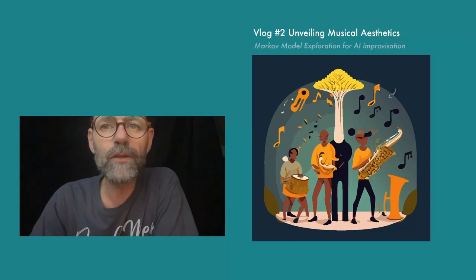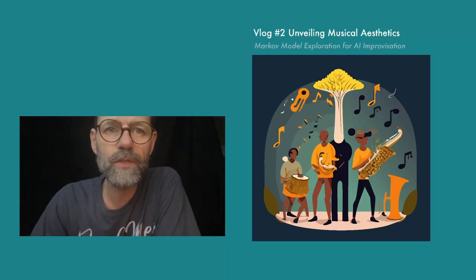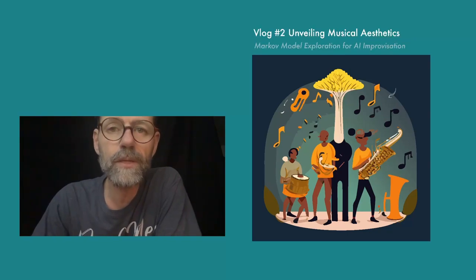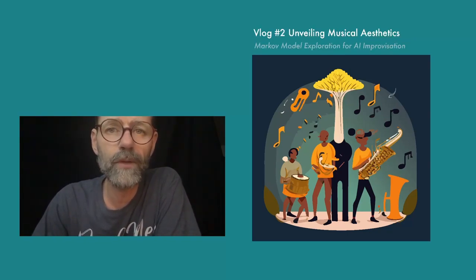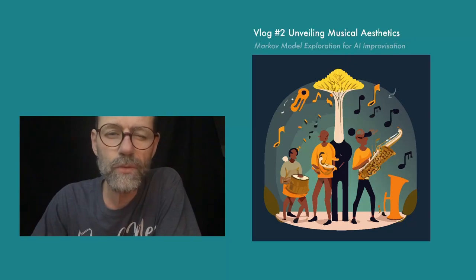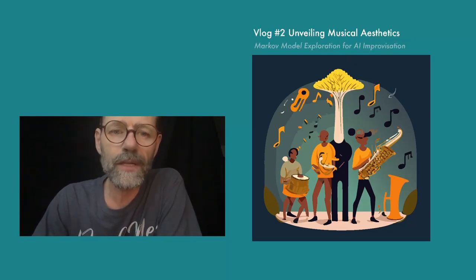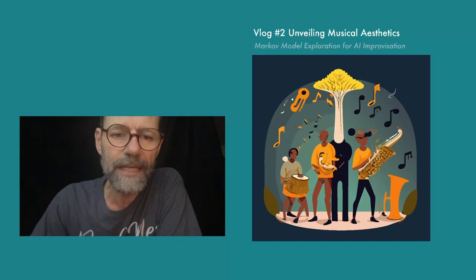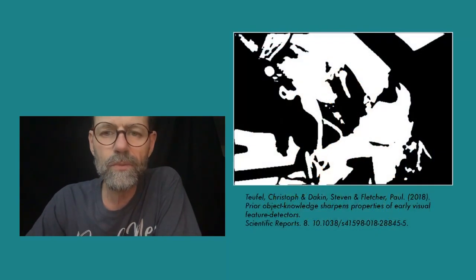To guide the computer in listening for specific elements when learning a particular musical style, it's crucial for us to clearly define what we consider the important features of that style. In order to start off, I'd like to invite you to participate in an experiment. Please take a look at this image.